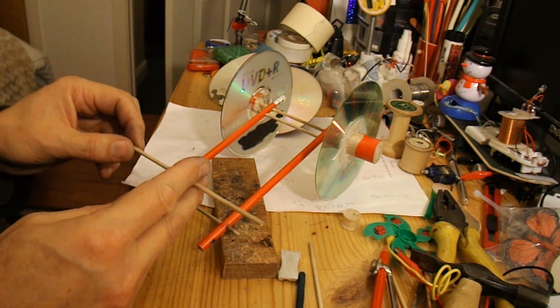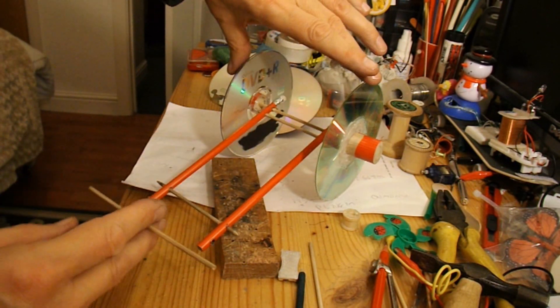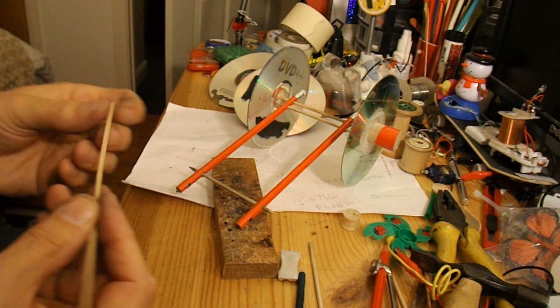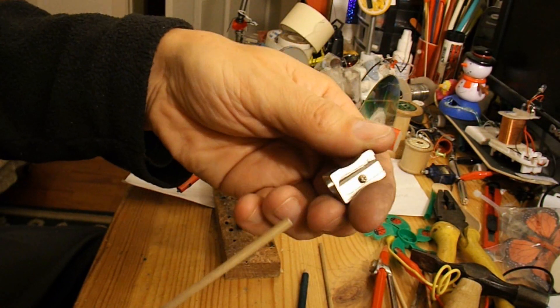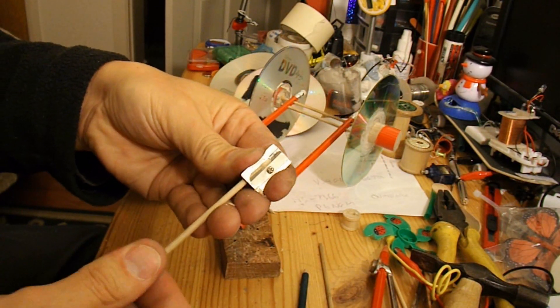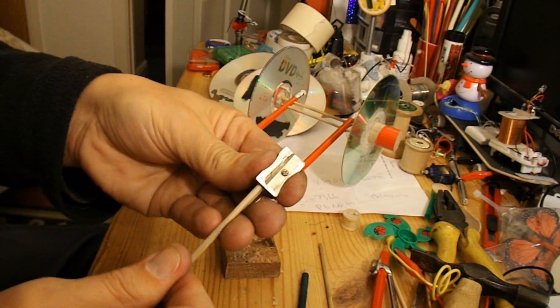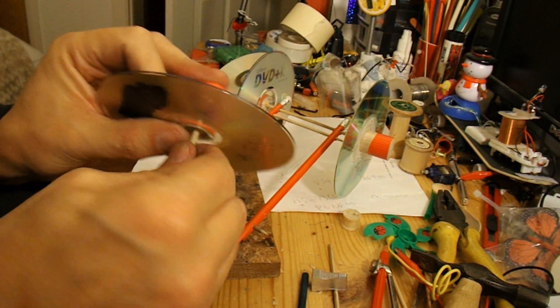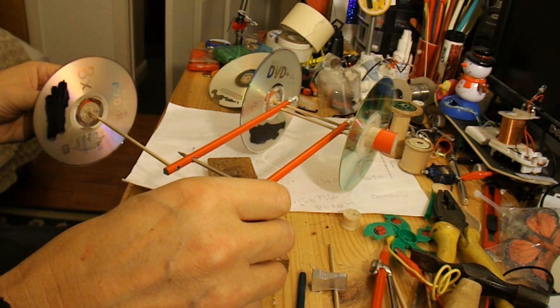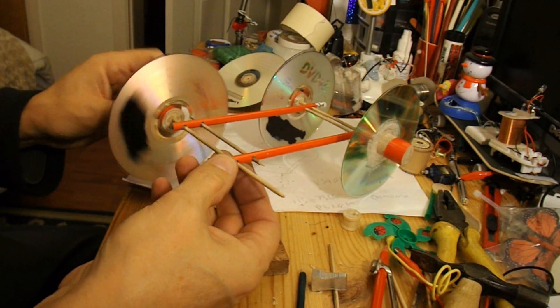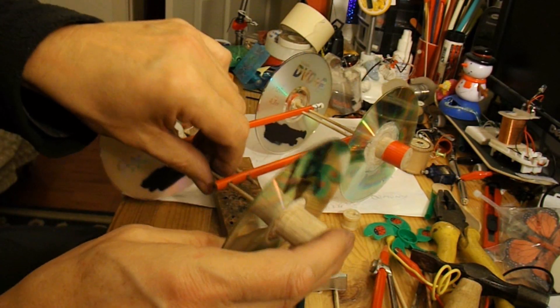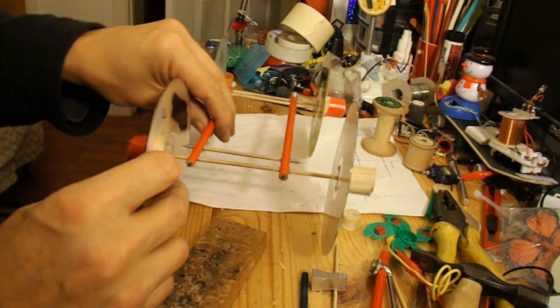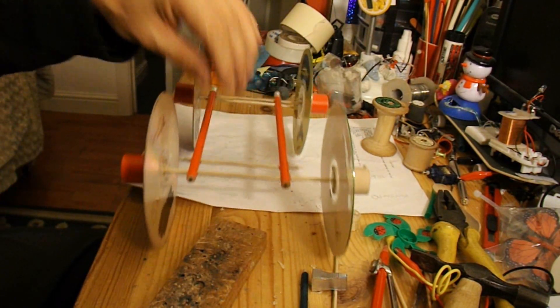I've cut the barbecue skewers so I've got two long pieces for the axles and two short pieces for the cross members. And I've also used a pencil sharpener to put a point on the end so it's easier to push them into the holes.